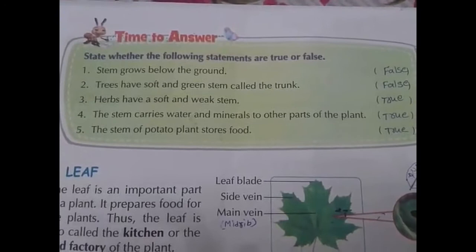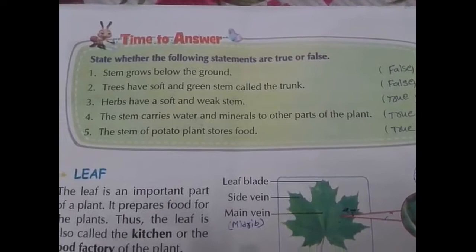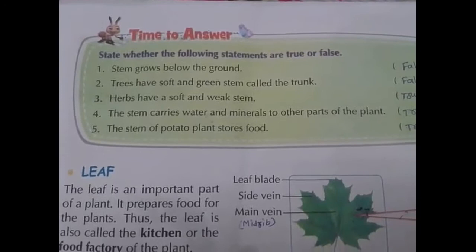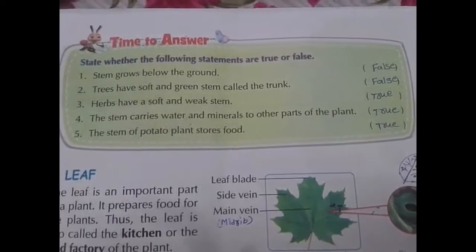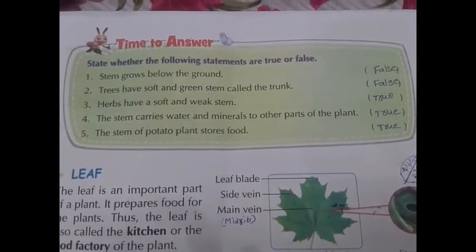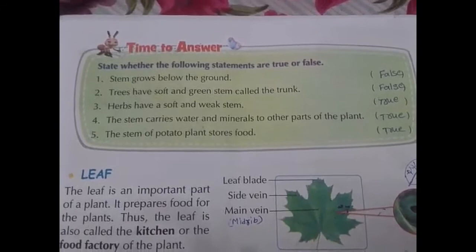Page number 77, true or false: Stem grows below the ground — False. Trees have soft and green stem called a trunk — False, because the trunk is thick and strong. Herbs have a soft and weak stem — True. Stem carries water and minerals to other parts of the plant — True. The stem of a potato stores food — True.